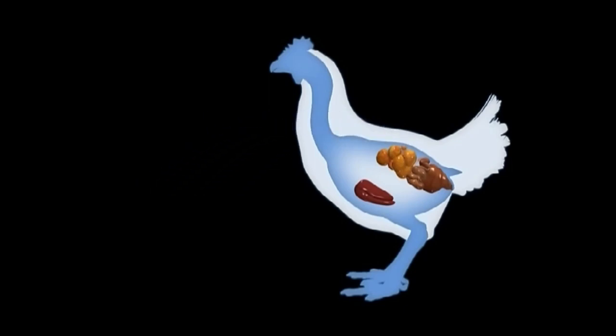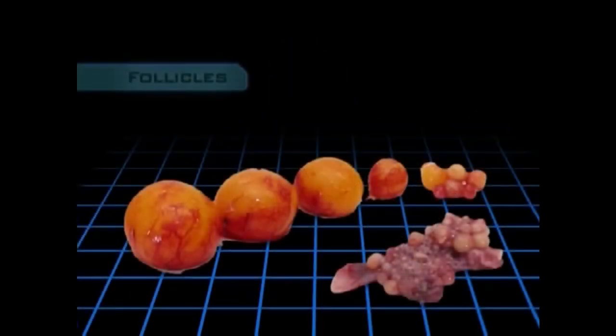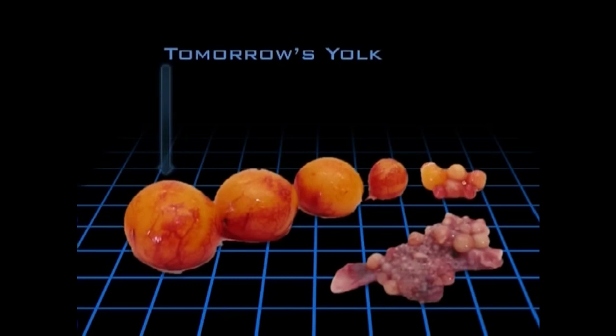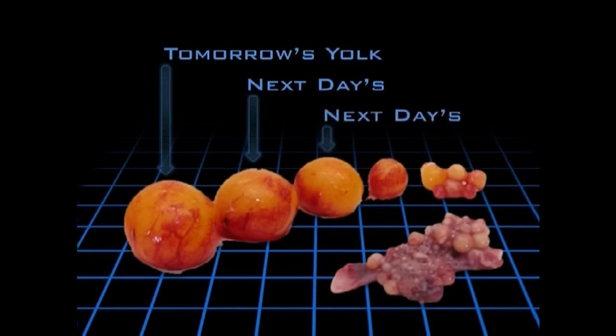In the ovary, tiny tissue bags, called follicles, fill with yolk and grow. The largest follicle on the ovary will release the yolk of the egg the hen will lay tomorrow, while the next largest will produce the next day's yolk, and the next largest will yield the next day's yolk, and so on.